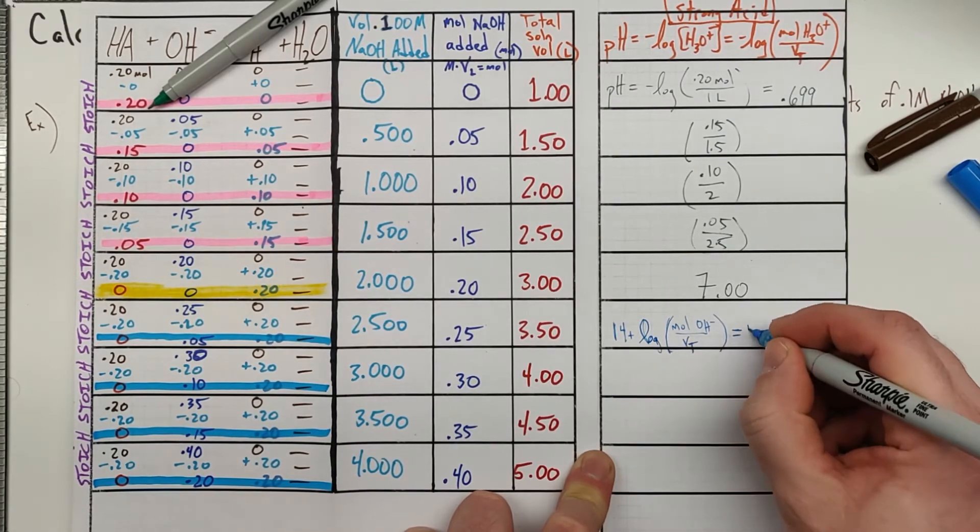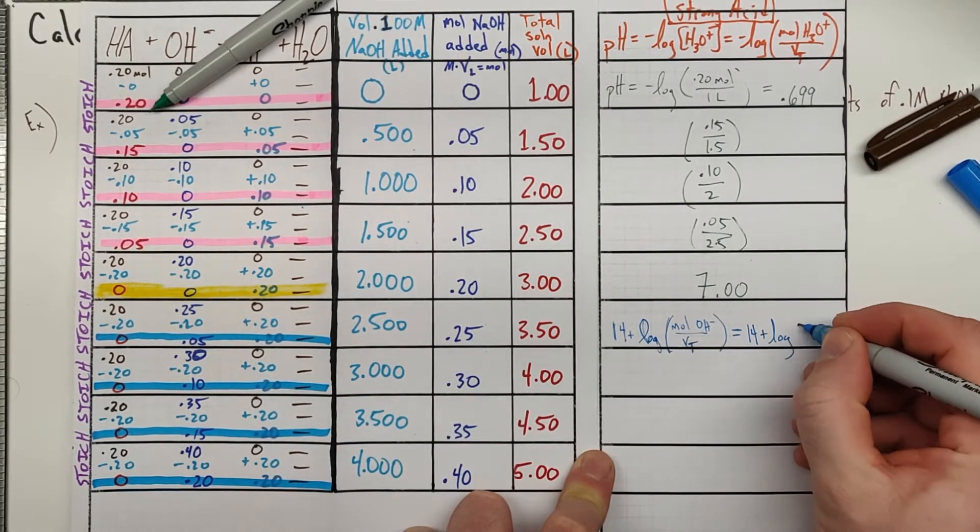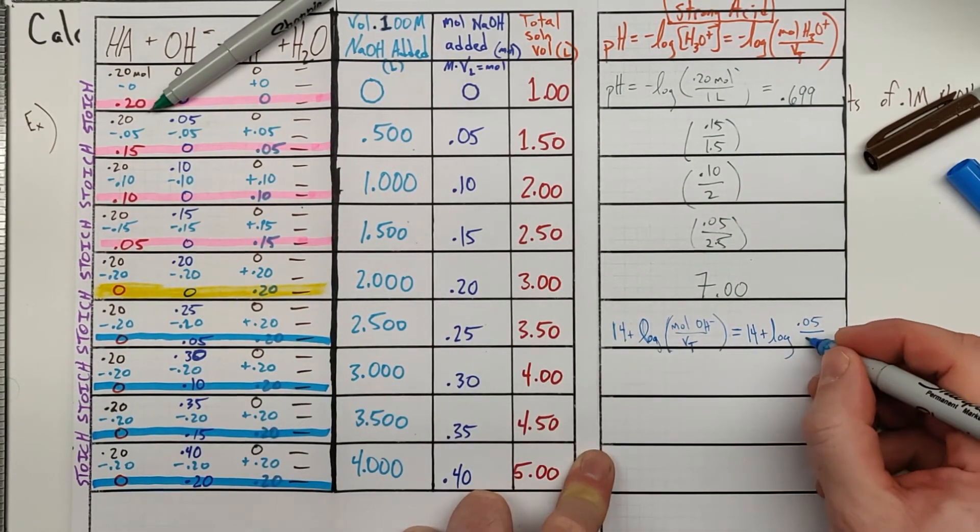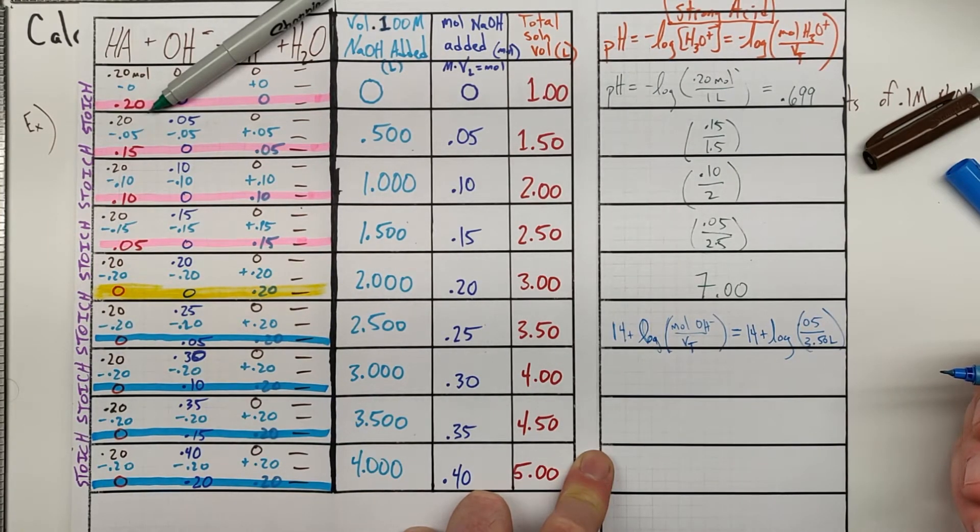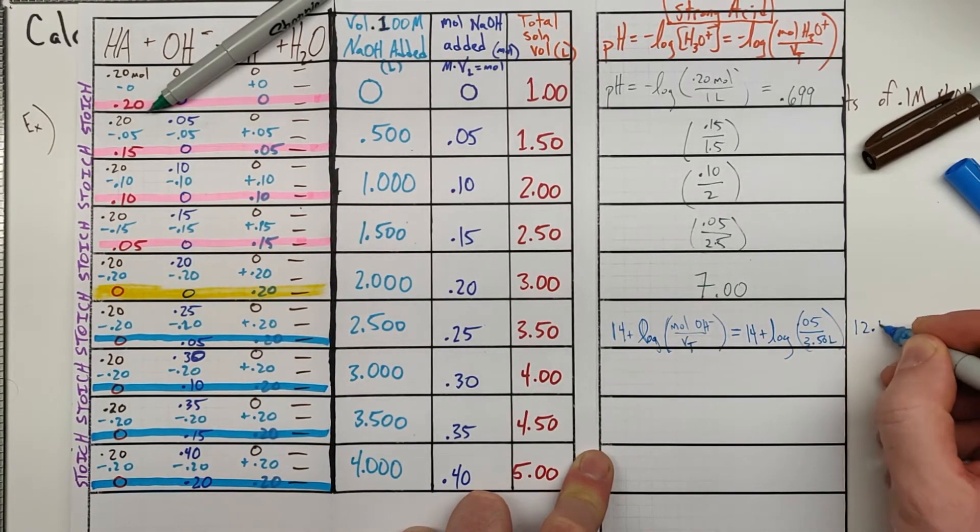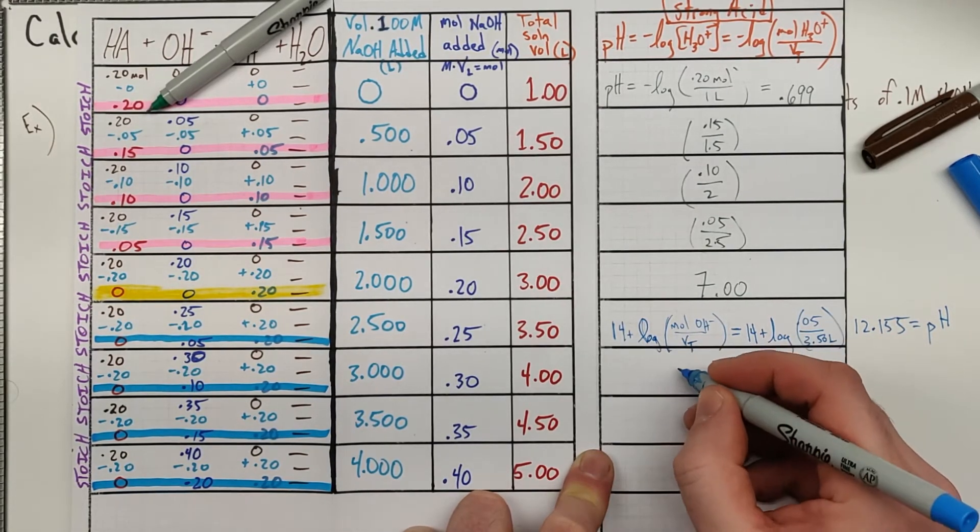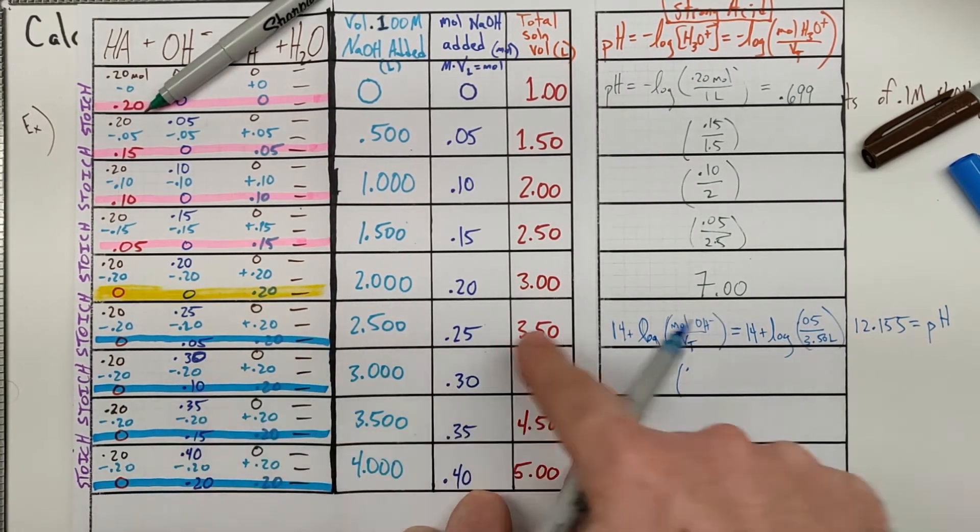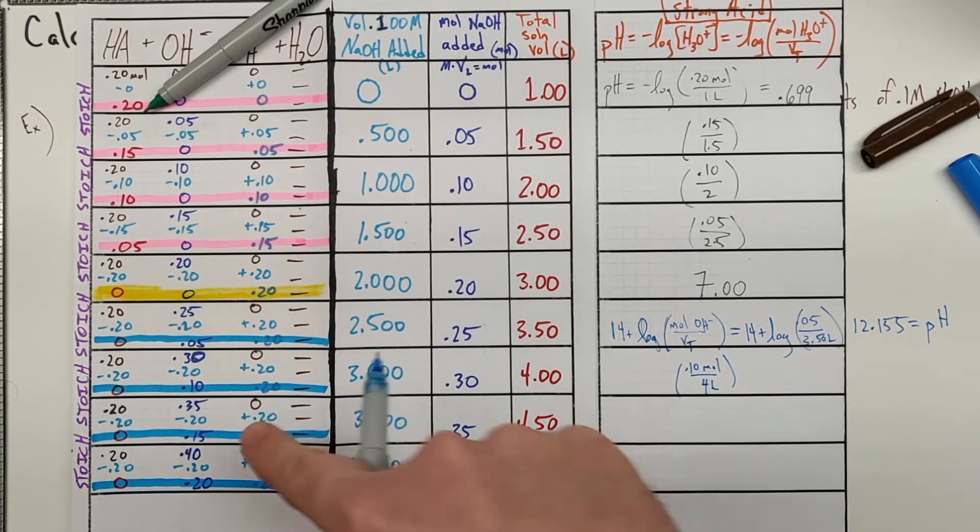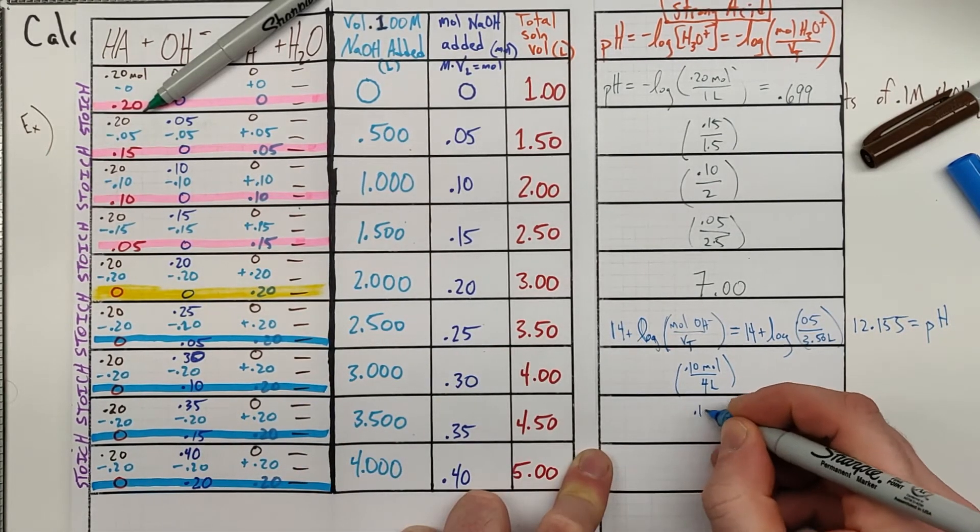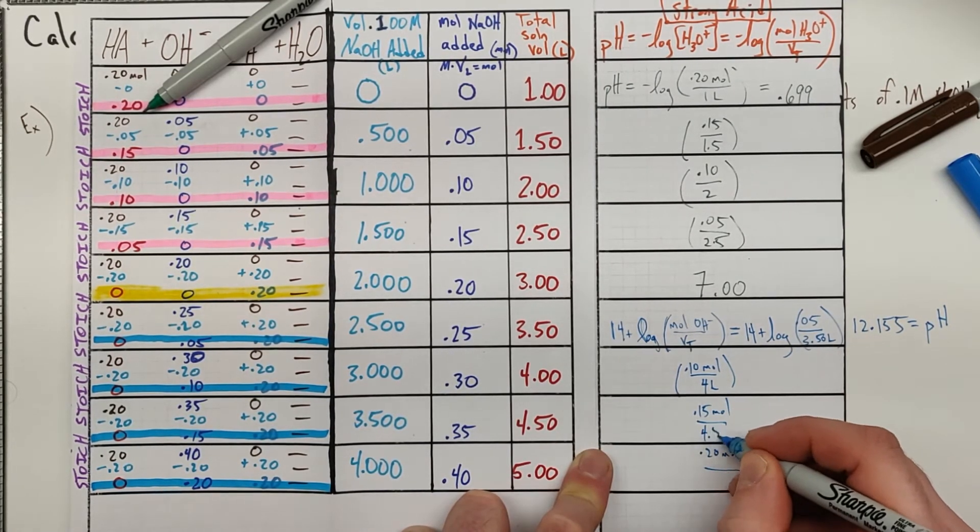For this one right here, that would be 14 plus the log of, we have 0.05 moles. And that is in, at that point in time, 3.50 liters. In this particular case, that ends up 12.155. I didn't really leave room, so I'll write it right there, 12.155 for our pH. And then we'll carry these calculations down again. We've got 0.10 and 4. And then in the next one there, we have our 0.15 and then our 0.2, 0.15 moles, 0.2 moles. And that's going to be over our 4.5 and our 5 liters.